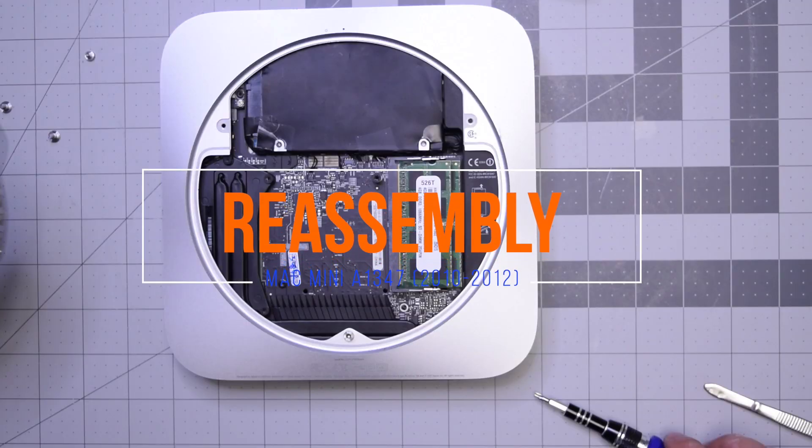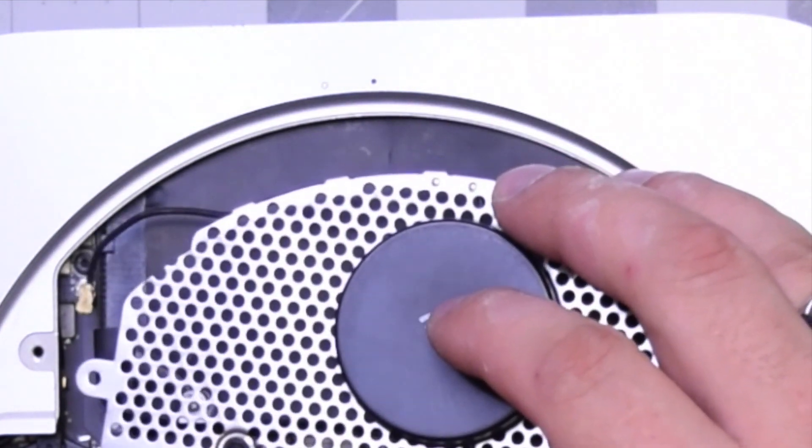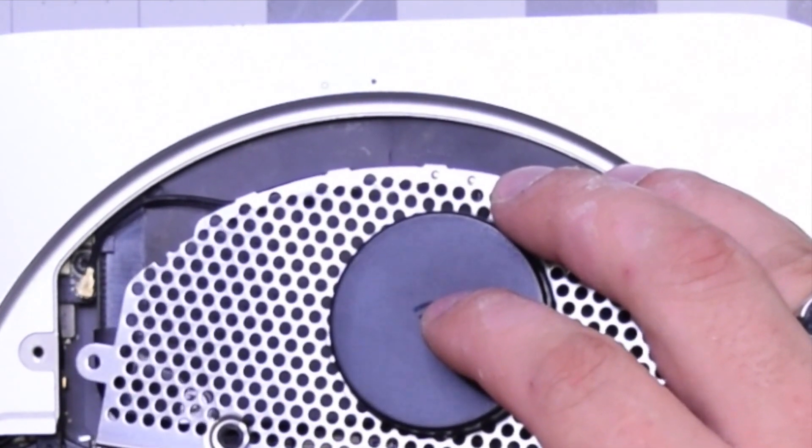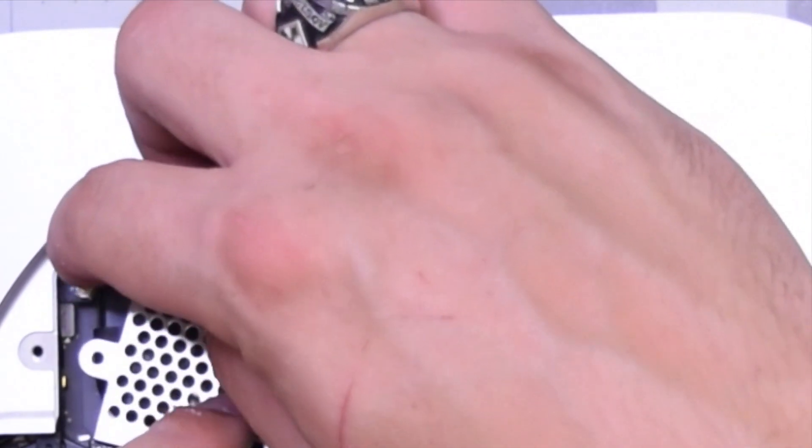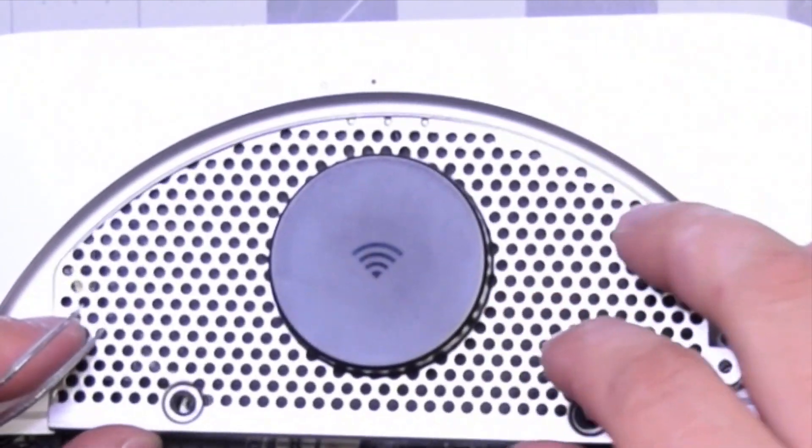Reassembly A1347. Go ahead and align the Wi-Fi antenna in the following orientation. Put its cable over the Wi-Fi card clip and then just pop it into place. Make sure it's nice and tight and locked.